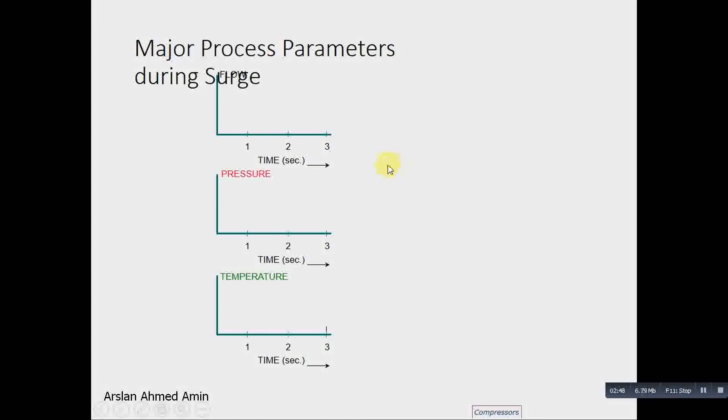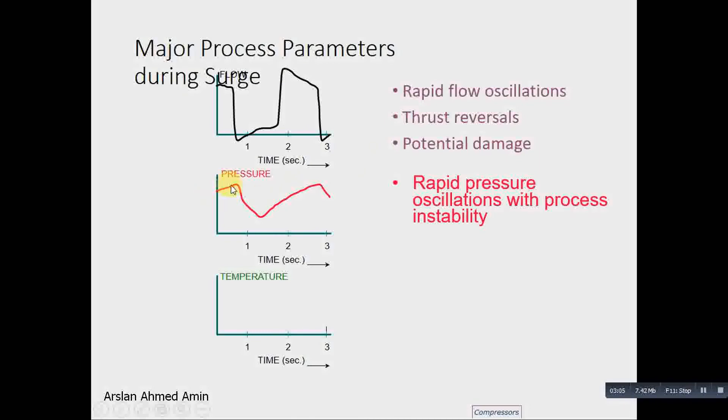We see rapid flow oscillations. In the surge condition, there are rapid flow oscillations, thrust reversals, and potential damage to the metallurgy of the compressor. The flow is greater and pressure is greater, but when the pressure reduces, the flow reverses, and then the pressure normalizes and oscillates. This is an oscillatory system.